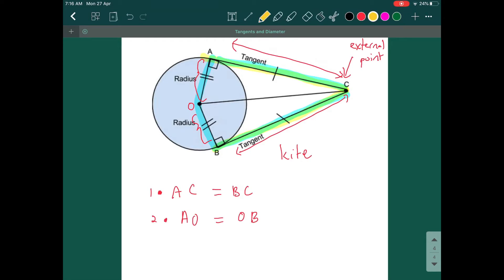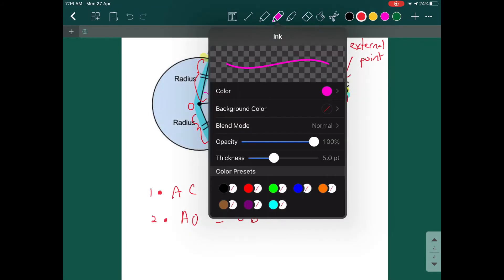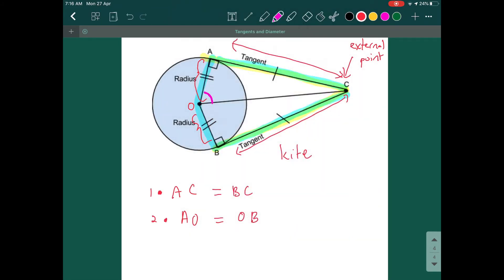What else you need to know? What happened with the angles in the circle? Angles in the circle, this angle here will be equal to this angle. So number three, angle AOC equals angle BOC.